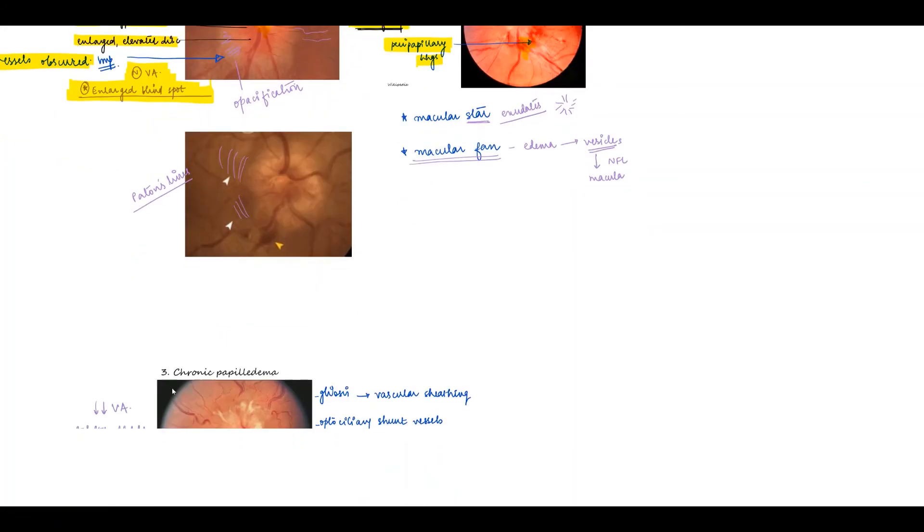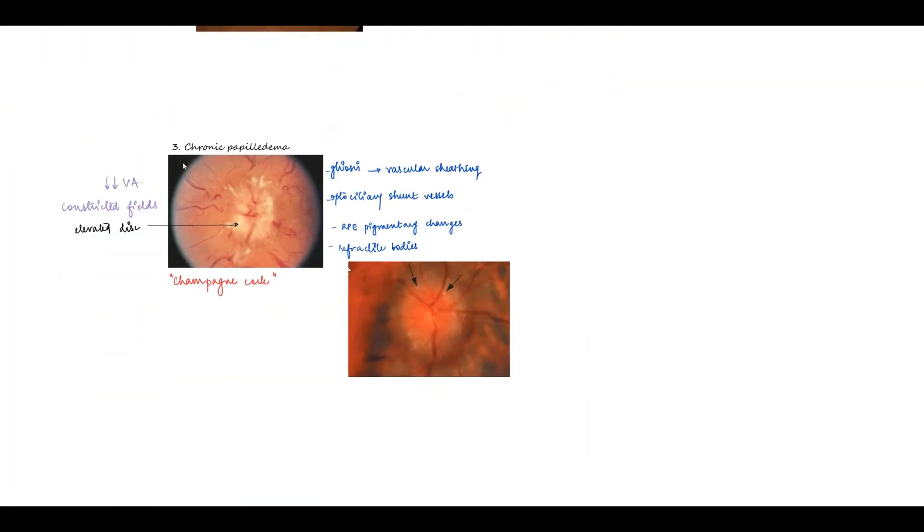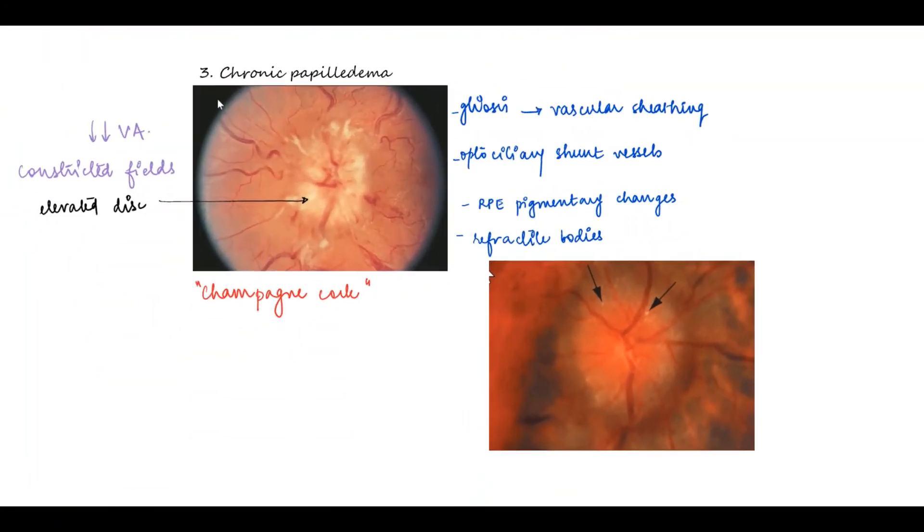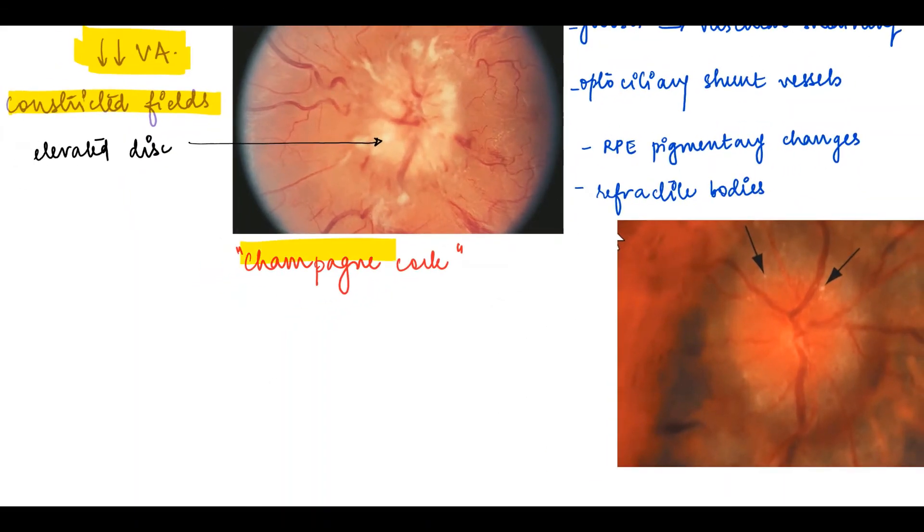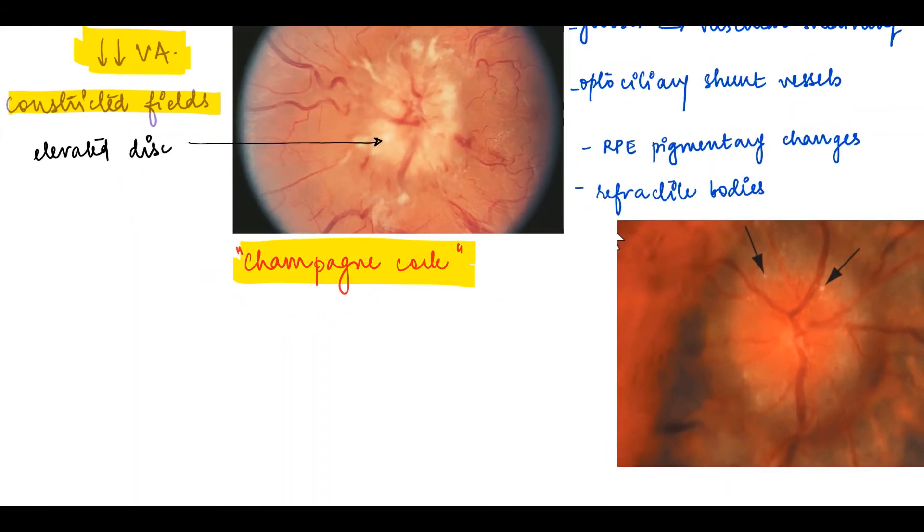After the swelling in the acute stage, moving on to the chronic papilledema stage. Here as we can see there is a characteristic reduction of the hyperemia. The exudates start getting resolved and it is at this stage that the patient will complain of a drop in the vision. Field testing will show a constricted field and the disc is still elevated and indistinct but the hyperemia is reduced, and this gives it a champagne cork appearance of the disc in the chronic stage.